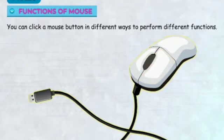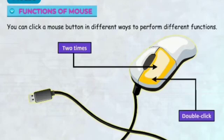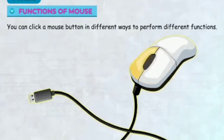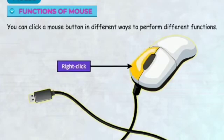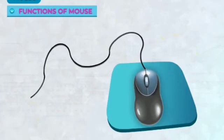Double click: Pressing the left mouse button two times quickly is called double click. Right click: Pressing the right mouse button once is called right click. Dragging a mouse: Clicking and holding the left button while moving the mouse is called dragging.